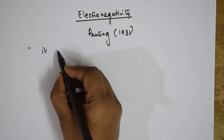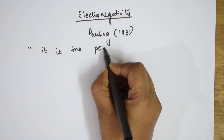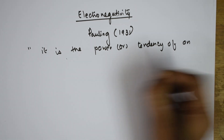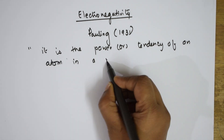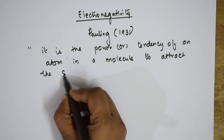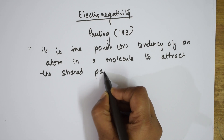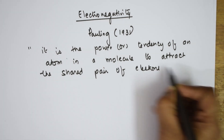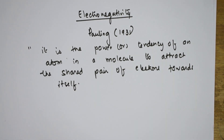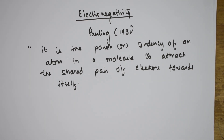The definition: it is the power or tendency of an atom in a molecule to attract the shared pair of electrons towards itself. Now, I will be teaching you about Millikan's method, Pauling's method, and Allred-Rochow's method. Before going to those concepts, let me teach you what are the factors which affect electronegativity.